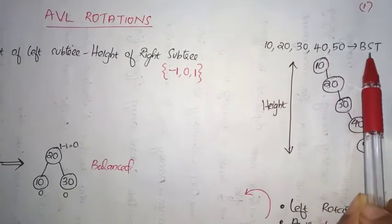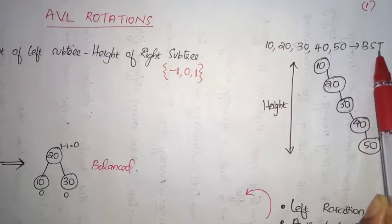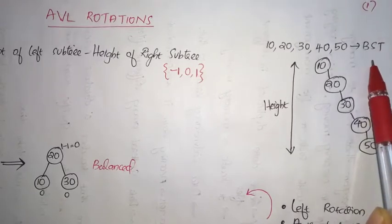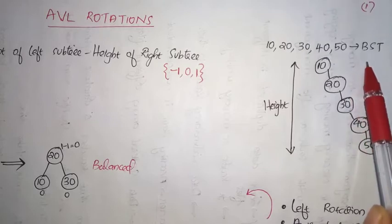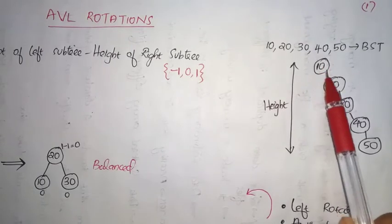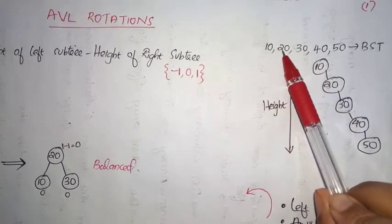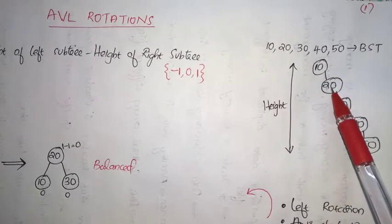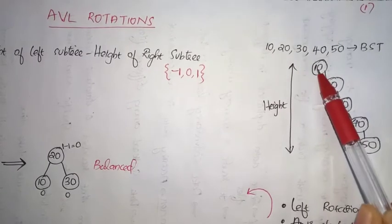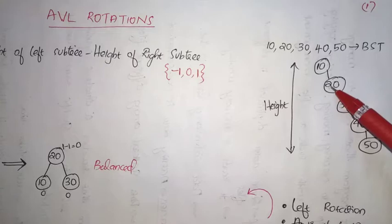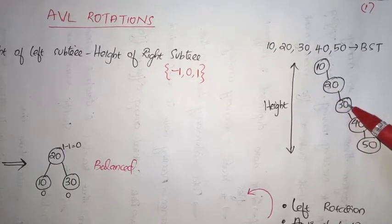In a binary search tree, the right child will be greater than the root and the left child will be lesser than the root. So first of all I inserted 10 as the root element. Since 20 is greater than 10, it becomes the right child of 10. Since 30 is greater than 10, it goes to the right child, and since 30 is again greater than 20, it goes to the right child of 20, so 30 will be placed here.